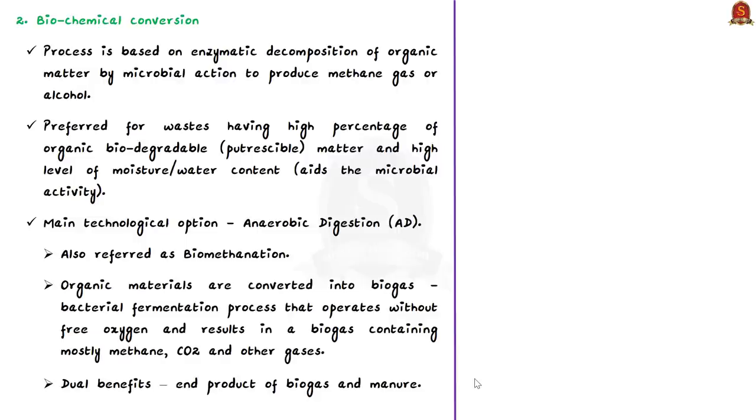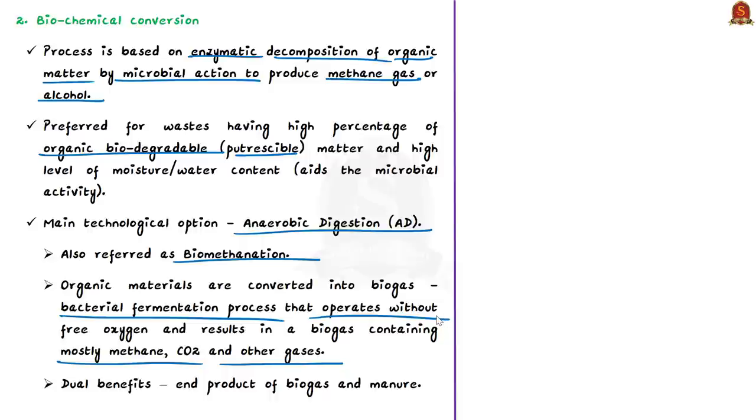The second one is biochemical conversion. This process is based on enzymatic decomposition of organic matter by microbial action. This produces methane gas or alcohol. The biochemical conversion processes are preferred for wastes having high percentage of putriscible matter that is organic biodegradable matter and high level of moisture or water content which aids the microbial activity. The main technological option under this category is anaerobic digestion which is also referred to as biomethanation. In this technology, organic materials are converted into biogas. Anaerobic digestion is a bacterial fermentation process that operates without free oxygen and results in a biogas containing mostly methane, carbon dioxide and other gases. It has dual benefits. It gives biogas as well as manure as the end products.